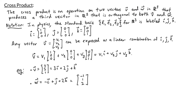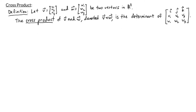So now we're ready to define the cross product. Let v and w be two vectors in R3 where v has entries v1, v2, v3 and w has entries w1, w2, w3. The cross product of v and w is the determinant of the matrix with first row i, j, k, second row v1, v2, v3, and third row w1, w2, w3.